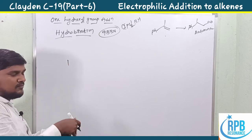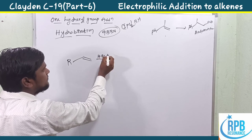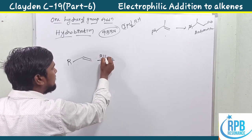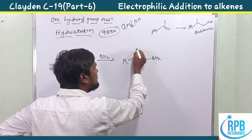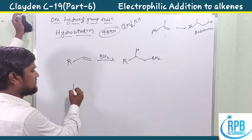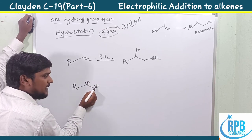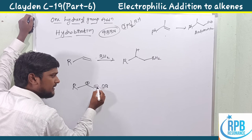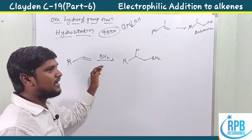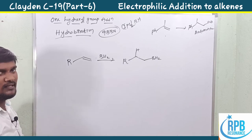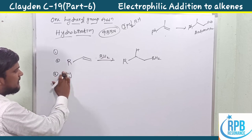For symmetrical alkenes like cyclopentene both sides are equivalent. For unsymmetrical alkenes, boron adds to the sterically less crowded side. The terminal carbon has a negative character that attacks boron's vacant orbital, and the more stable carbocation is at the internal carbon. So in unsymmetrical alkenes, hydroboration adds boron to the less hindered (terminal) position.